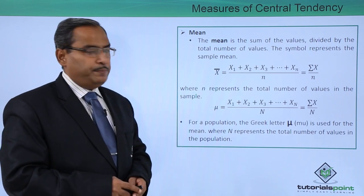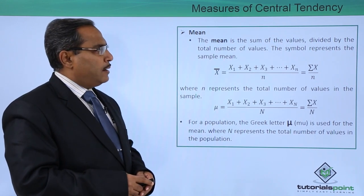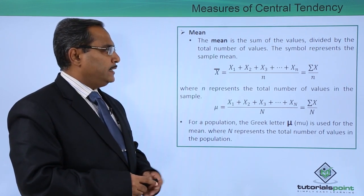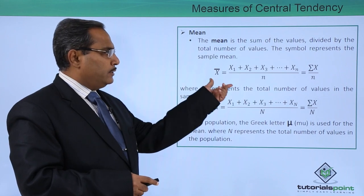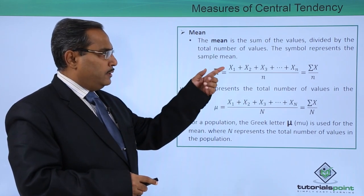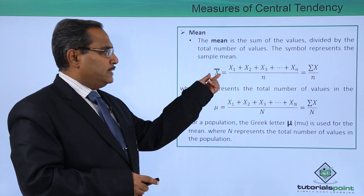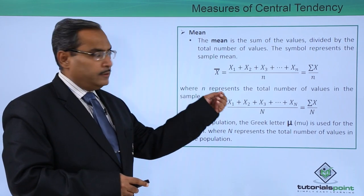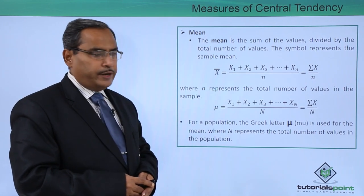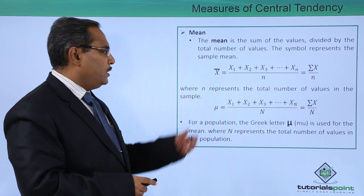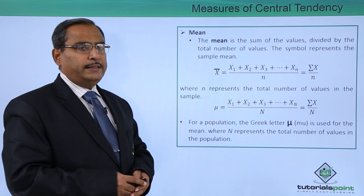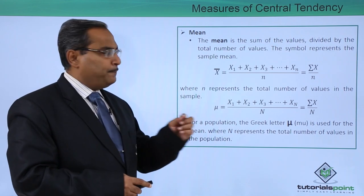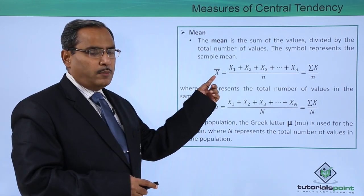First, we are going to discuss mean. The mean is the sum of values divided by the total number of values. The symbol representing the sample mean is x̄, that is x̄ = (x₁ + x₂ + ... + xₙ) / n, which can also be written as σx / n, where n represents the total number of values in the sample. Whenever we are calculating the mean for a sample, it will be expressed in the form of x̄.